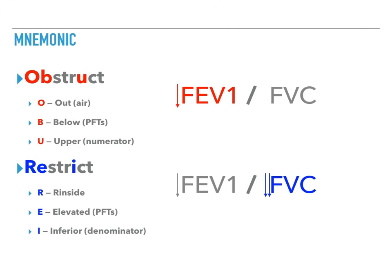Let's jump down to restrict. The R stands for rinside. It's harder to get the air inside. So I just wrote rinside. That's my mnemonic. There's no other way to remember it with the R. Rinside. It's harder to get air rin or rinside. E stands for elevated. The PFTs are elevated. So this ratio is greater than 0.7 or greater than 70%. And the reason, that's what the I stands for. It's the inferior number or the denominator.